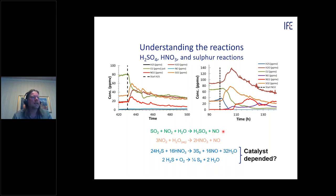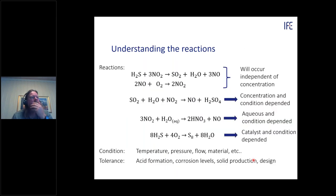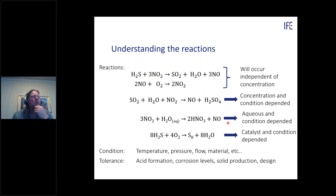To summarize: carbon steel must be used but you must ensure no aqueous phase forms and oxidation species are kept low. The specification can be relaxed if you know what impurities you have — for example, if no NO2 is present you can allow slightly higher levels of other impurities. However, good corrosion data is still missing and we do not fully understand all the process design challenges yet.